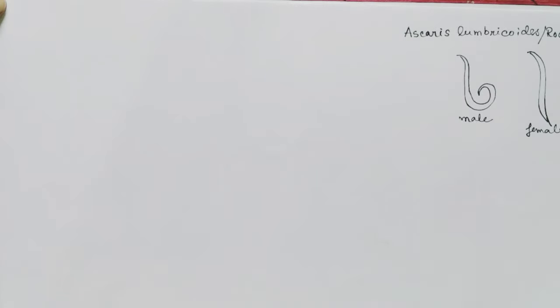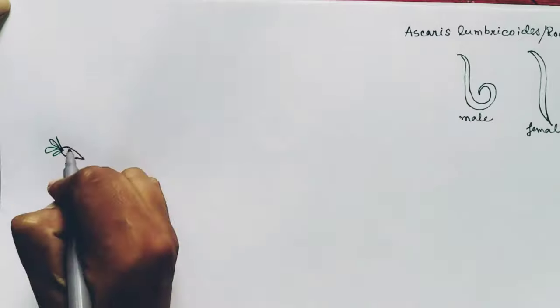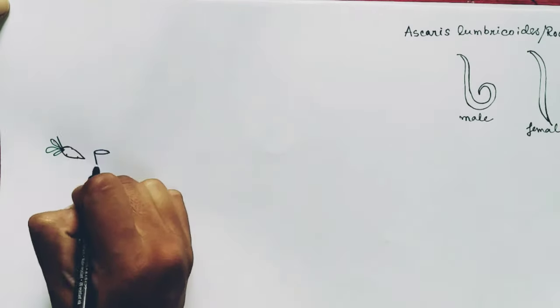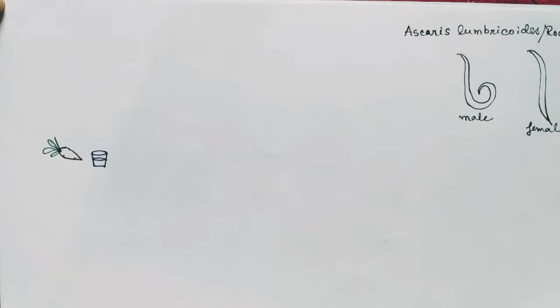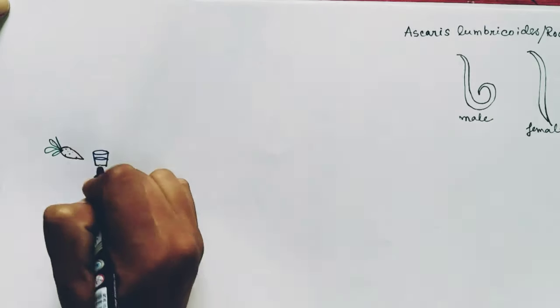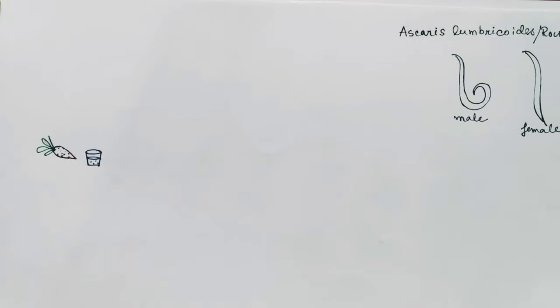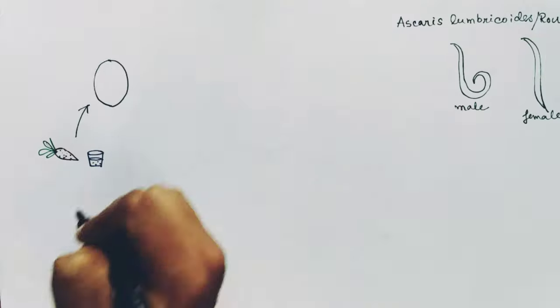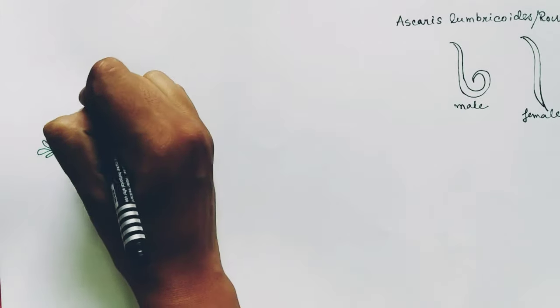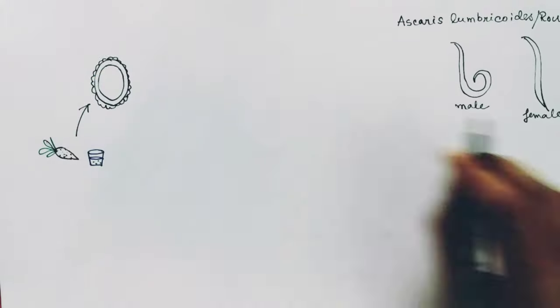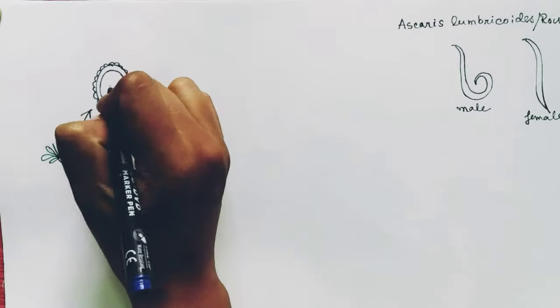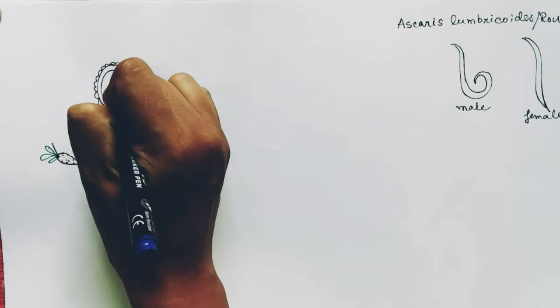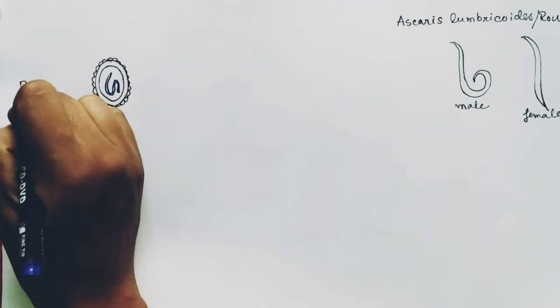So now, how does this Ascaris or roundworm get inside our body? The eggs of the Ascaris get inside our body when we consume contaminated food or drinks. The fertilized eggs of the Ascaris can be present in vegetables or other foods or drinks, and they contain rhabditiform larvae of Ascaris lumbricoides.